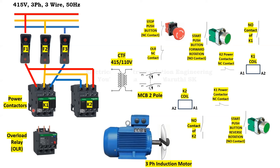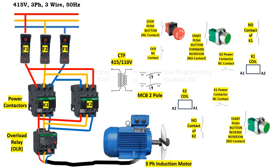K1 power contactor is used as the forward contactor, and K2 power contactor is used for reverse direction. We have connected the bus bar between K1 power contactor and the overload relay incoming terminals. Similarly, from K2 outgoing terminal, we have connected to the overload relay. The overload relay is common between the forward power contactor and the reverse power contactor. We have laid the cable from overload relay outgoing terminal up to the 3-phase induction motor. This is how the power diagram of the forward-reverse starter looks.